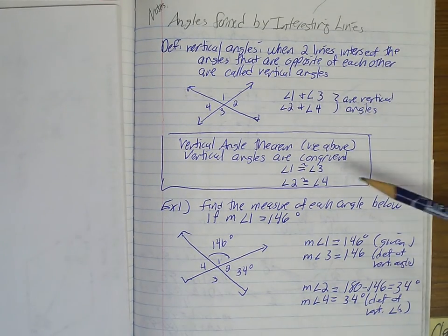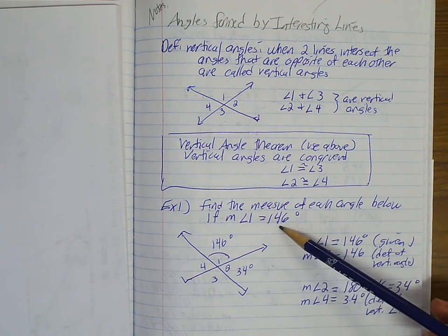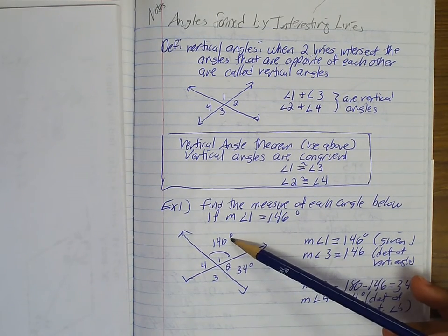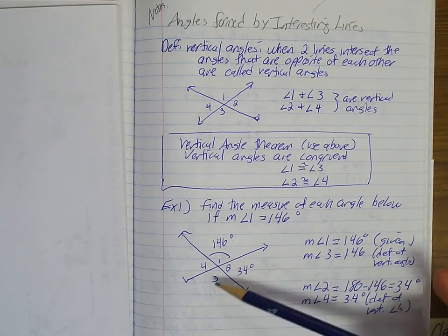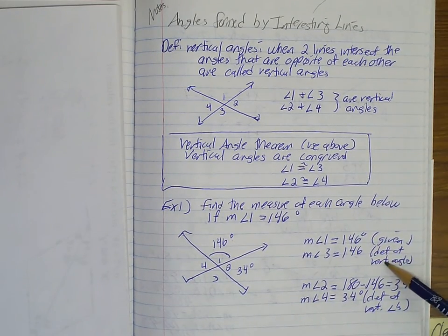Vertical angles are congruent. So example number 1: find the measure of each angle below if m∠1 = 146°. So angle 1 is 146, that is my given. That means angle 3 would also have to be 146, by definition of vertical angles.